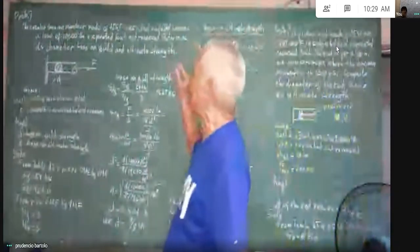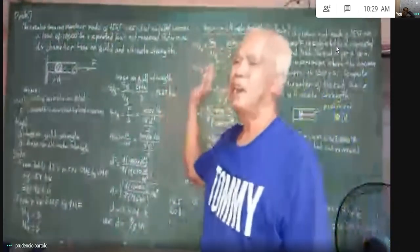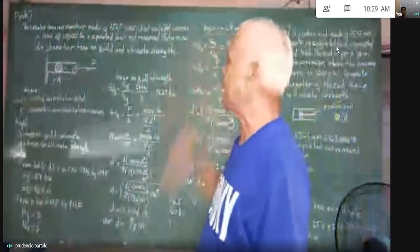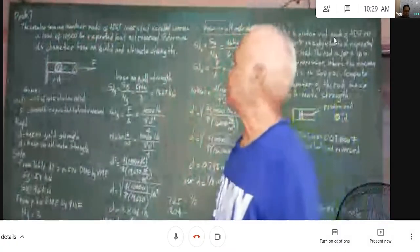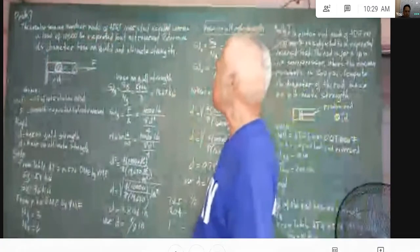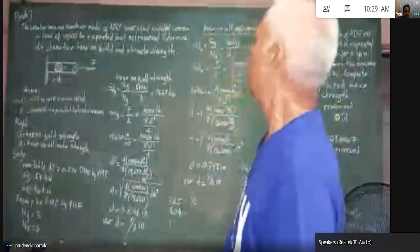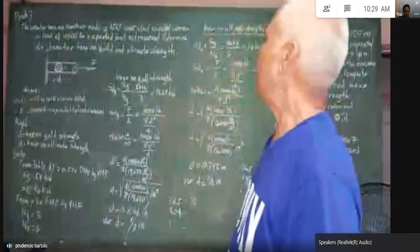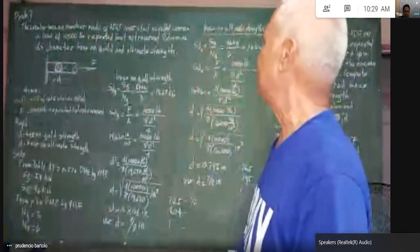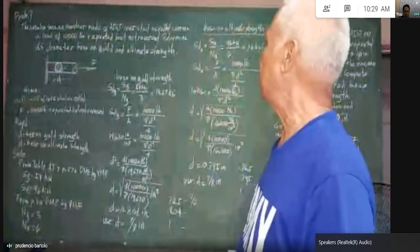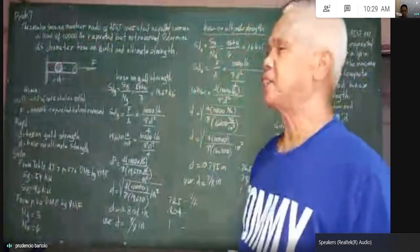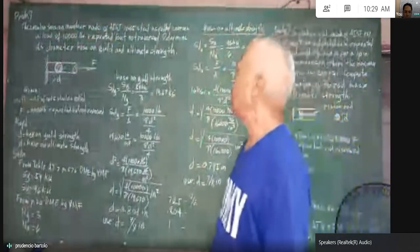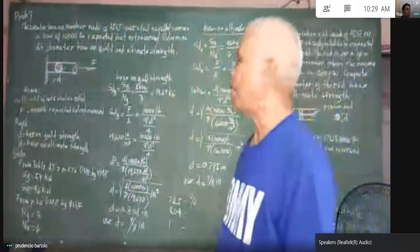The next problem we are going to consider also involves tensile stress. As stated in the problem, the circular tension member made of AISI 1045 steel as rolled carries a load of 10,000 pounds.